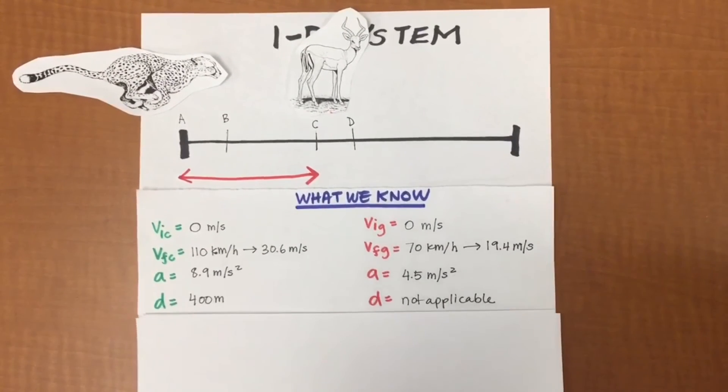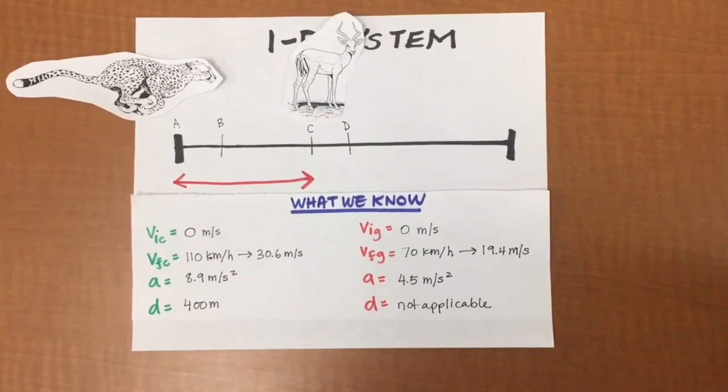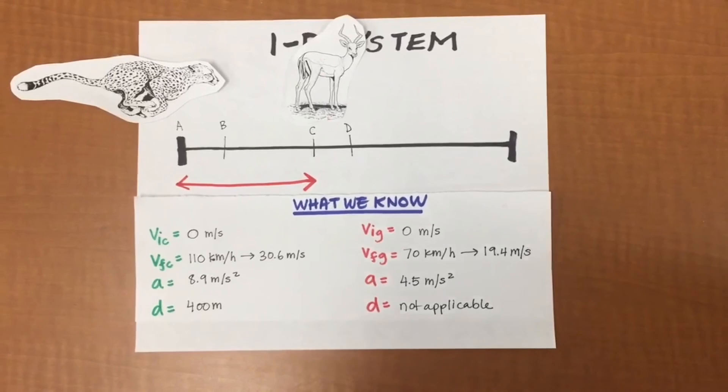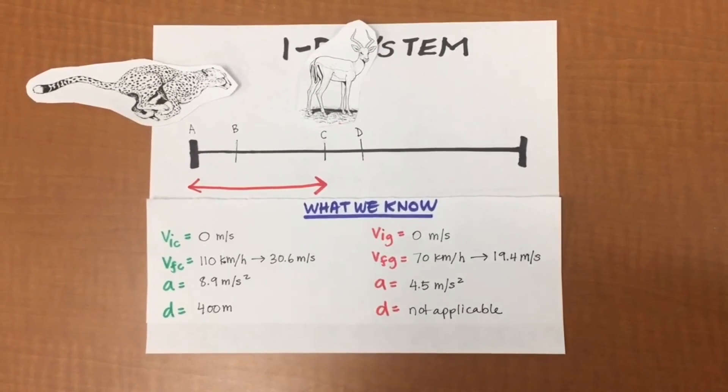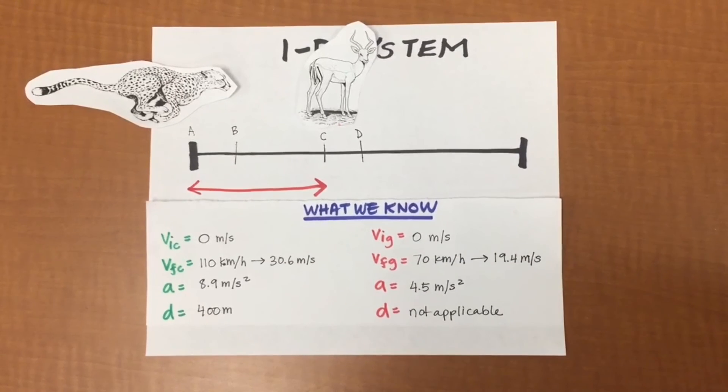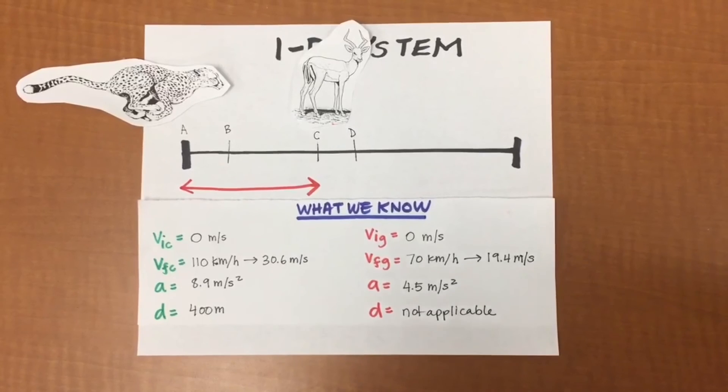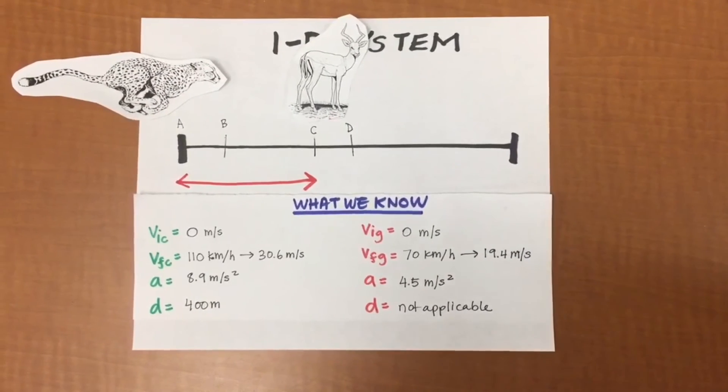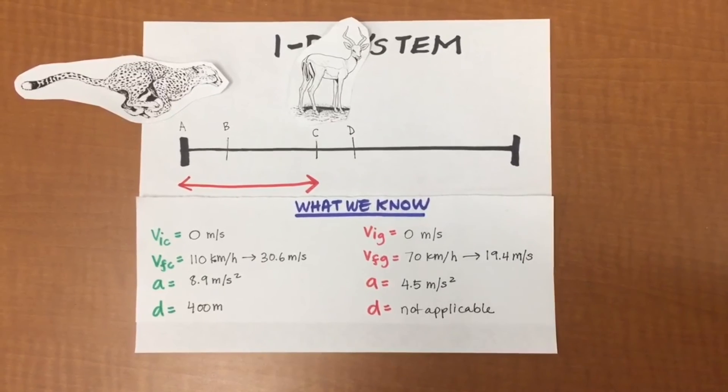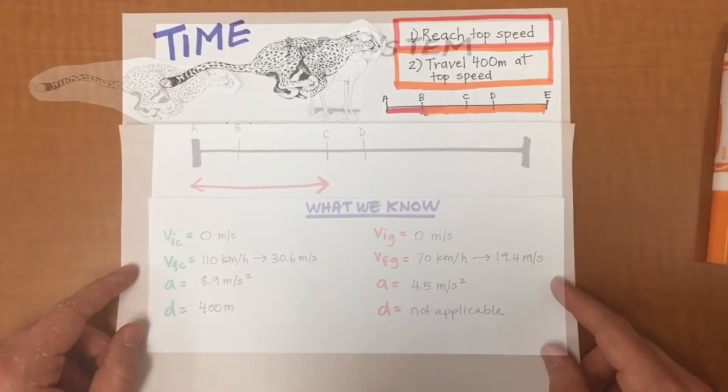And lastly, this being the most important piece of the puzzle, we know that the maximum distance a cheetah can maintain maximum velocity for is only 400 meters. This is because they can only run at top speed for about 17 seconds before their body overheats, which could cause them to pass out or even fry their brain. Now the gazelle's maximum distance that it can run at top speed is not applicable here because a gazelle's distance that it can run at top speed is much longer than the cheetah's.